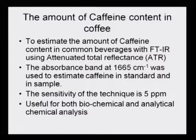The absorbance band at 1665 cm⁻¹ was used to estimate the caffeine in standard and in the sample. It is a calibration method. First, a pure caffeine sample was analyzed and the peak was identified at 1665 cm⁻¹, then various samples from beverages containing caffeine were analyzed as samples. Always when there is a standard, we make a calibration curve to see the linearity response of the machine as well as the method.